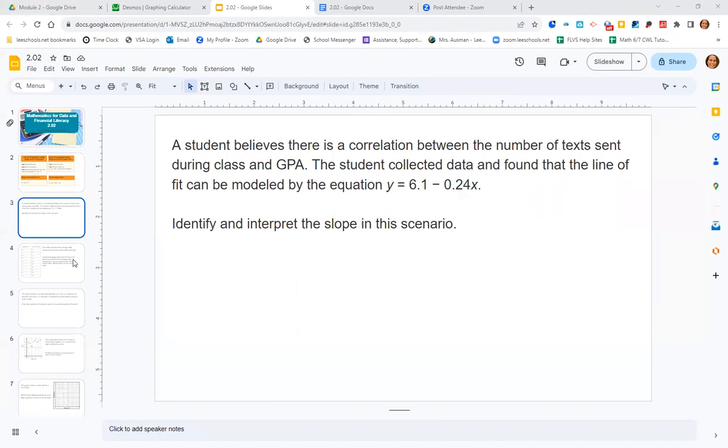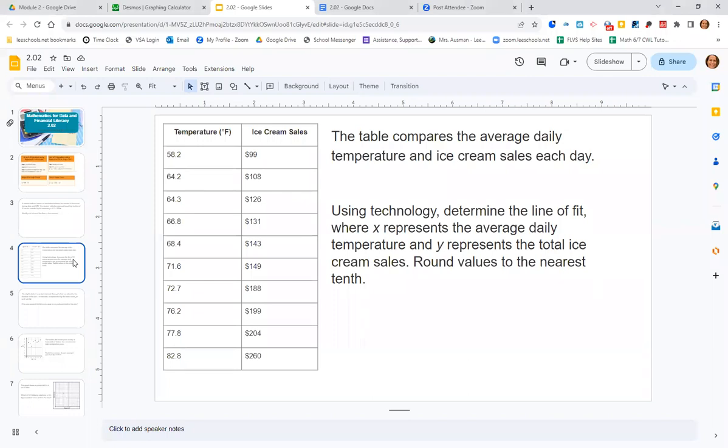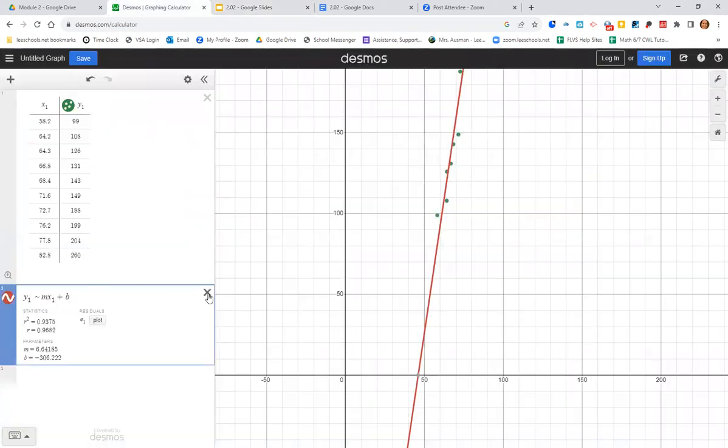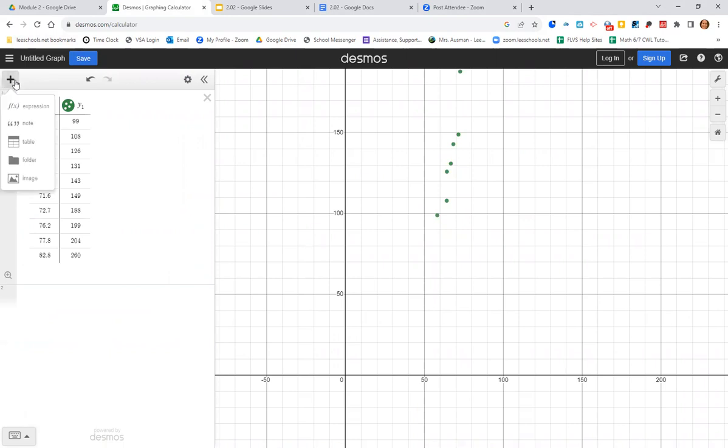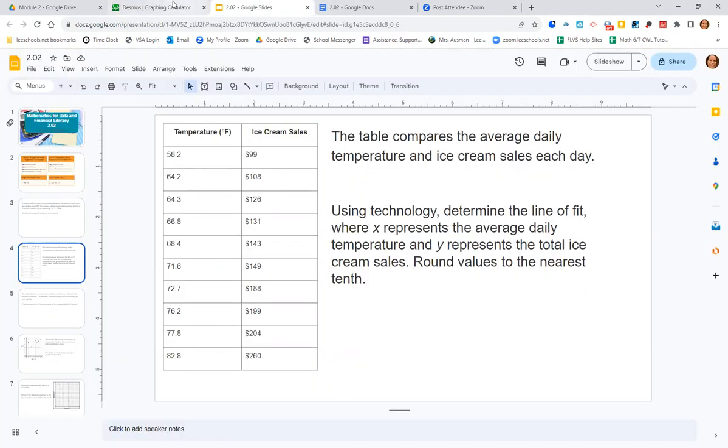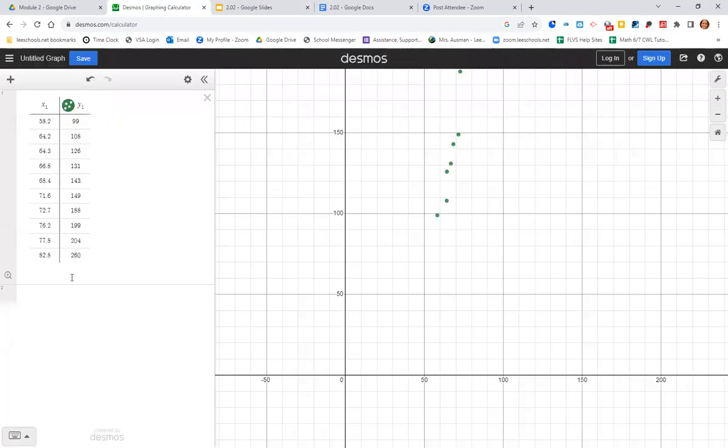Alright, now it's telling us that we have this table to compare the daily temperature and the ice cream sales. And it wants us to use technology to determine the line of fit, where x represents the daily temperature and y represents the total ice cream sales. So if we go to desmos.com, we can click on the plus sign and click on table. This will give us a blank table that we can then go back and forth from the question to the desmos and put in the information.